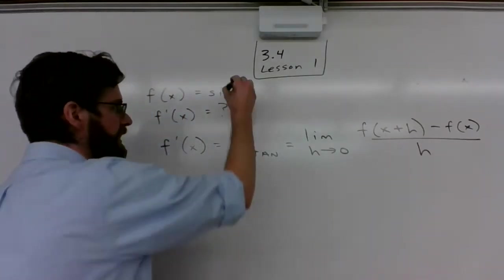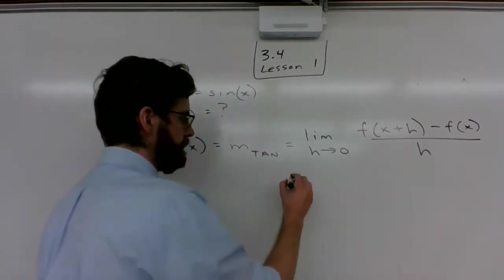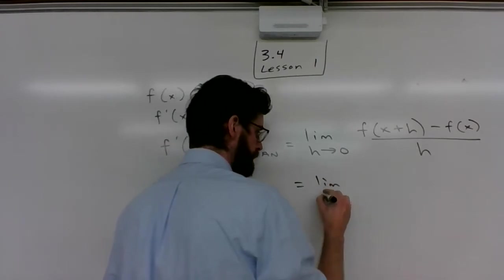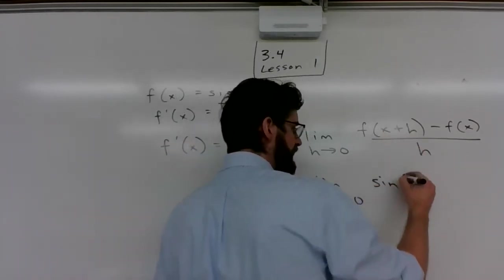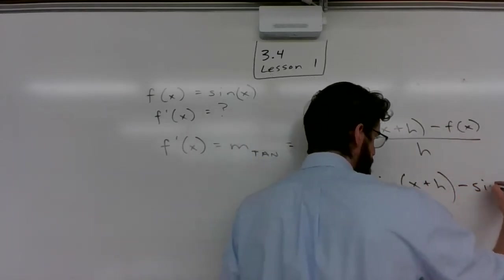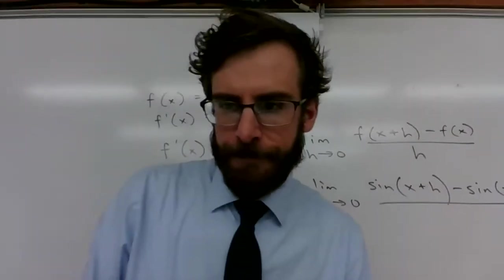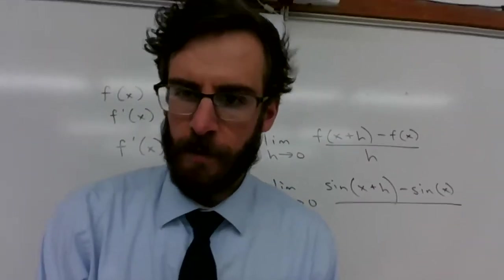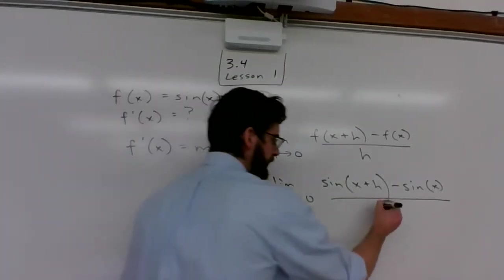So in place of the x, we're going to put x plus h. So it's sine of x plus h minus sine of x. You can't see that. My apologies. We're not playing that game. Here we go. Back up, back up. Divide that by h.